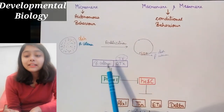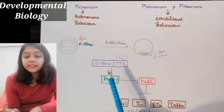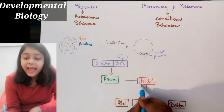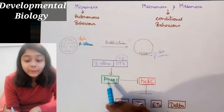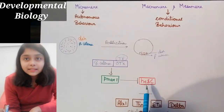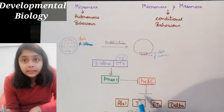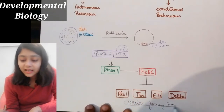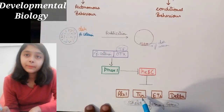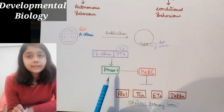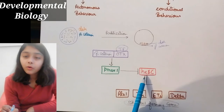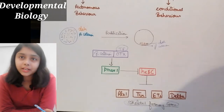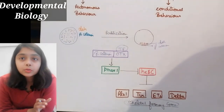Because of beta-catenin and DSH, micromere shows autonomous behavior. Beta-catenin is a transcription factor that activates OTX, which activates PMAR1. PMAR1 is an inhibitor of HESC. HESC in turn inhibits the skeletal forming genes ALX, THR, ETSS, and Delta. So PMAR1 is already set to inhibit HESC, which inhibits the skeletal forming genes — and these skeletal forming genes are responsible for autonomous behavior.